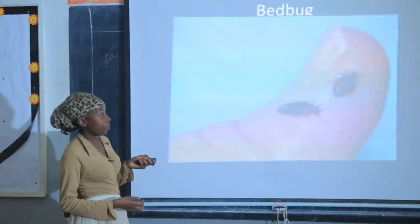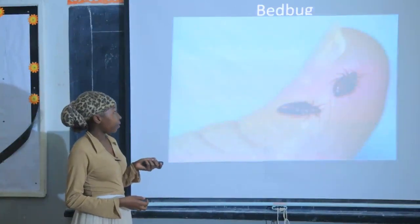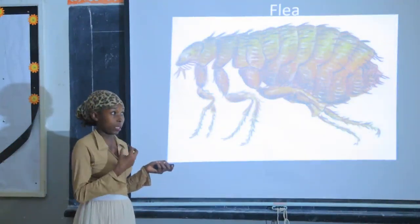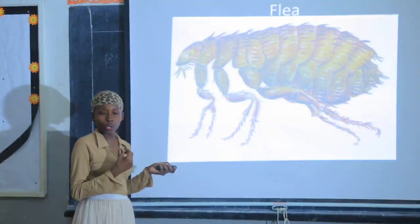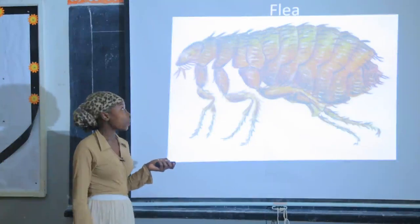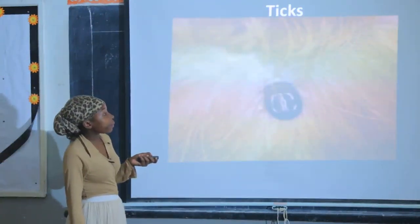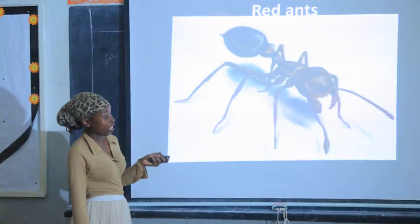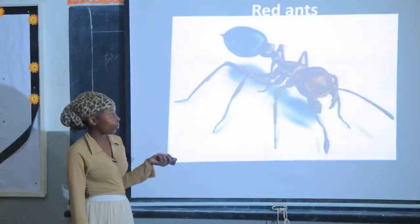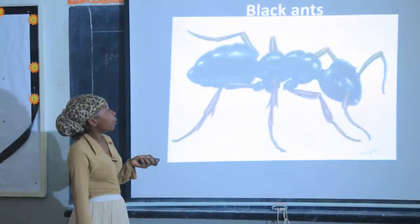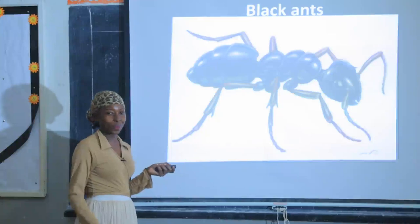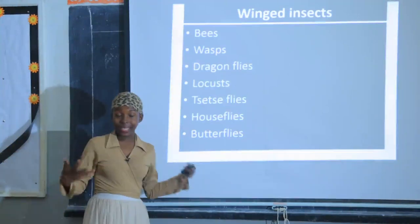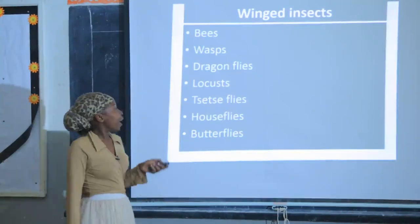Bed bugs are quite frightening. Fleas enjoy people's blood and like being in unclean places — if you're not clean, expect fleas. Ticks are mostly found on animals. Red ants have powerful jaws — once they bite you, you might cry for a long time. Black ants like eating sugar; they normally come into our sugar and eat it.